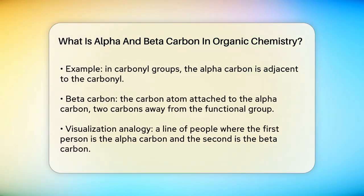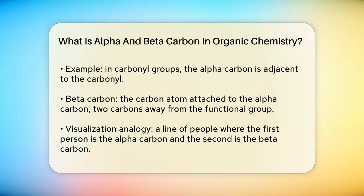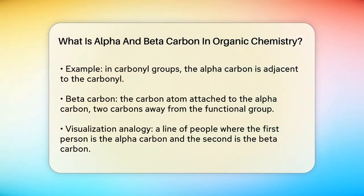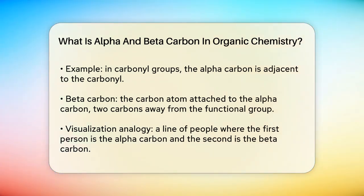Now, let's talk about the beta carbon. The beta carbon is the carbon atom that is attached to the alpha carbon. In other words, it's the second carbon atom away from the functional group. So if you have a chain of carbon atoms, the alpha carbon is the one right next to the functional group, and the beta carbon is the one right after that.